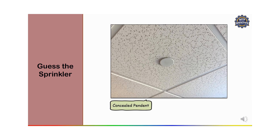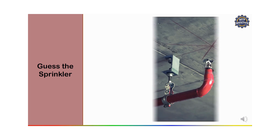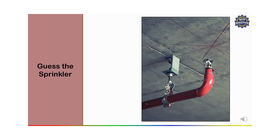The next sprinkler is a concealed pendant sprinkler, because as discussed, concealed sprinklers are installed within a cover plate or ceiling tiles and remain hidden until activated. The last one is an upright sprinkler.